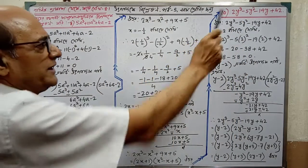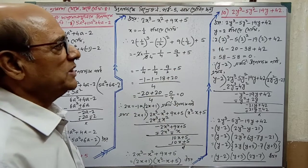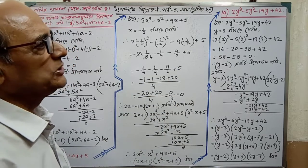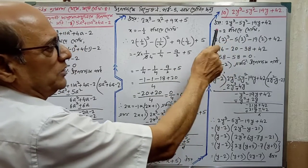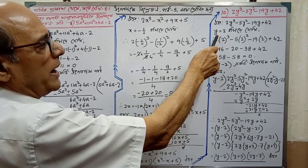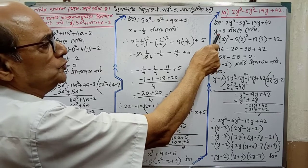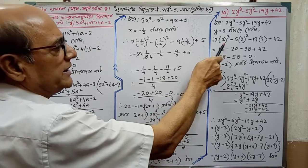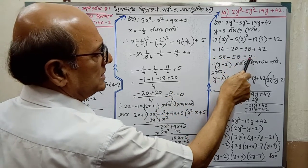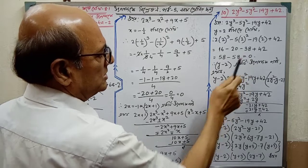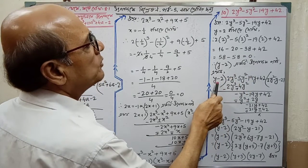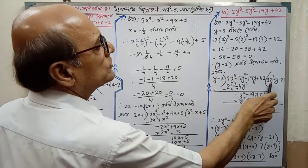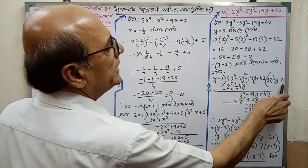Now we have 2y³ minus 5y² minus 19y plus 42. Putting y equals 2, this gives 0. So y minus 2 is a factor.